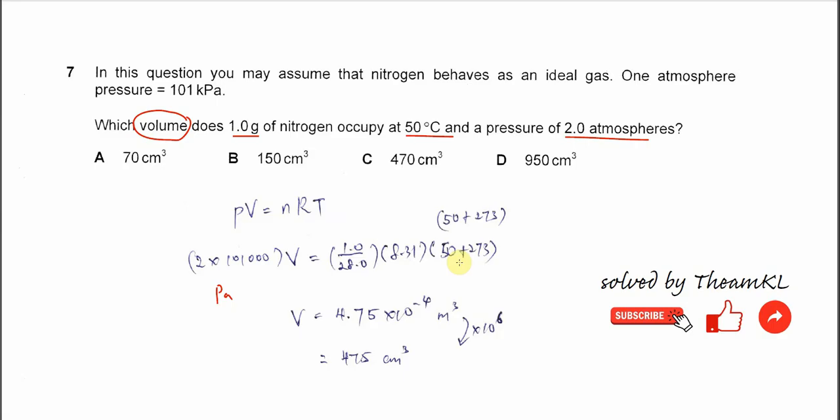And rearrange, you get this. The units, you get meter cubed. Because the answers are all in cm cubed, initially you get 4.75 times 10^-4 meter cubed. So converting this, you get 475 cm cubed, which is close to C.